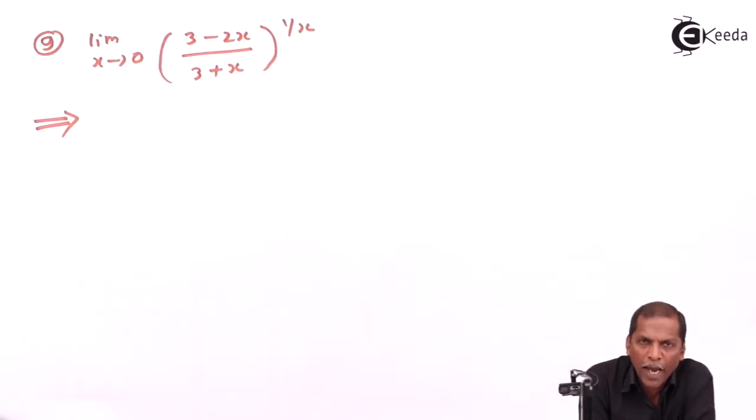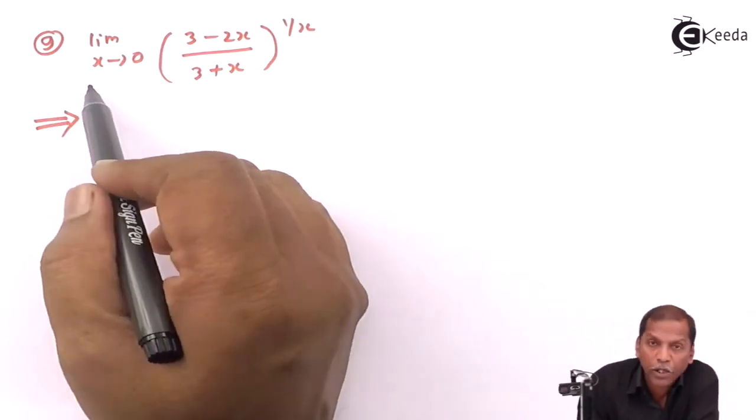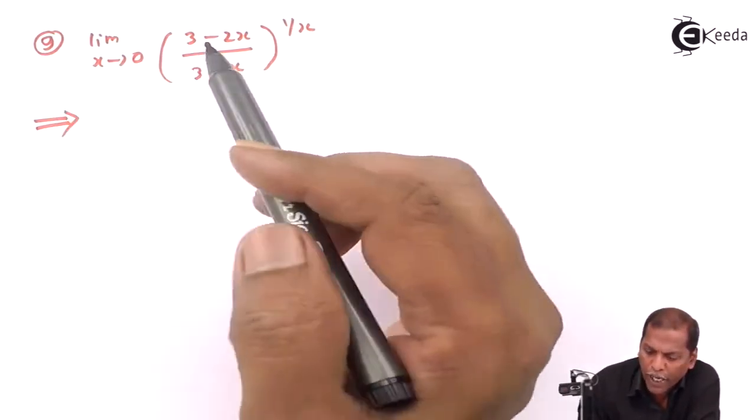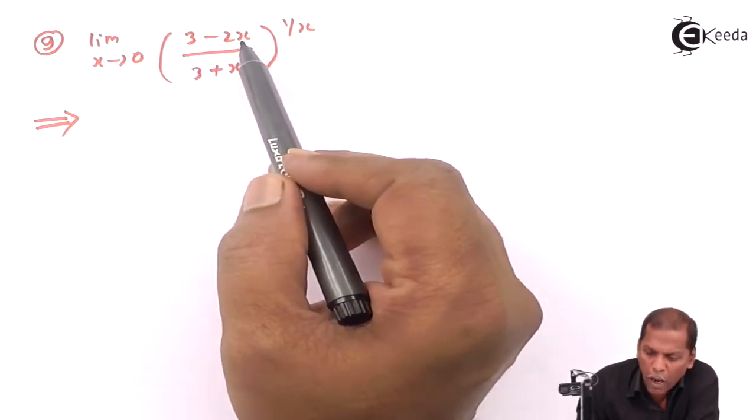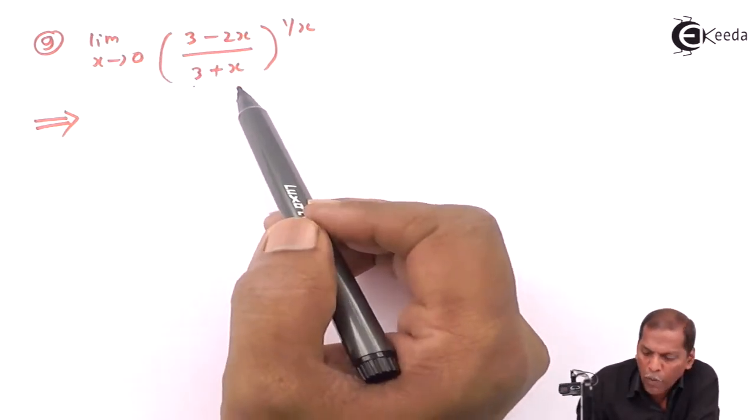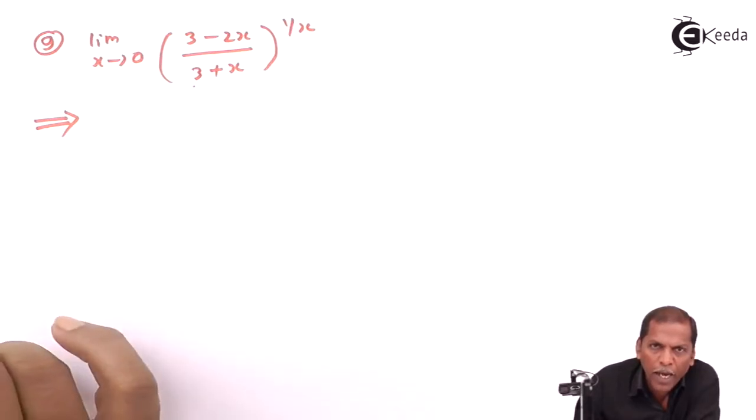The problem number 9 is: limit x tends to 0 of (3 minus 2x upon 3 plus x) whole bracket raised to 1 by x. Now let's see the solution.